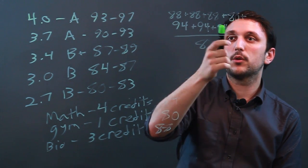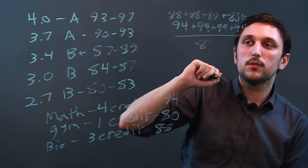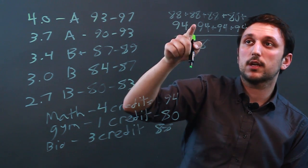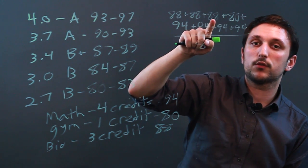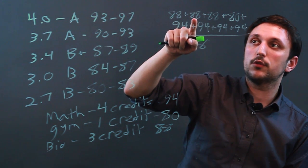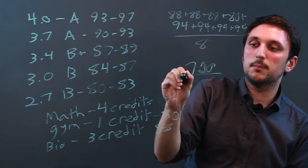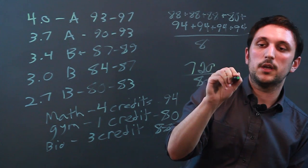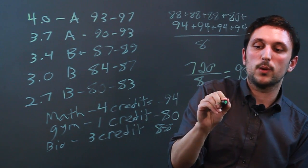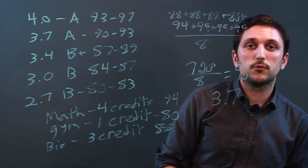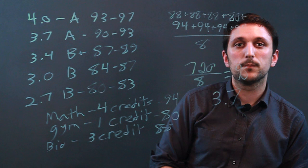And this number should equal — 800 minus 24 is 776, minus 20 is 756, minus 12 is 744, 732, 720. So it's 720 divided by 8, which is 90. Now a 90 we're saying is an A-, so your GPA is a 3.7. I'm Charlie Kasov, and that is how you calculate an unweighted GPA. Thanks a lot.